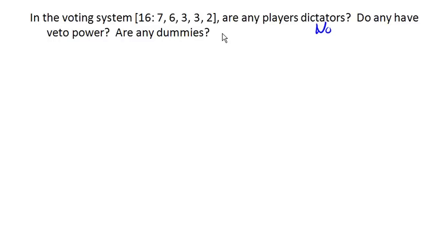In this case, we can see that 6 and 3 makes 9, and another 3 makes 12, and another 2 makes 14. And so even if all four of these people got together, they cannot reach quota, they cannot make a decision without this person's support. And so right away, we can see that this person has veto power.